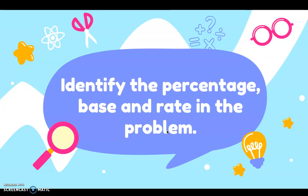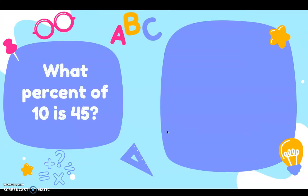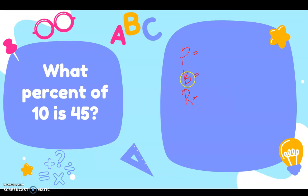Let's have more examples. Identify the percentage, base, and rate in the problem: what percent of 10 is 45? If we write P for percentage, B for base, and R for rate — the question asks 'what percent,' so we are looking for the rate. The rate is the missing value.